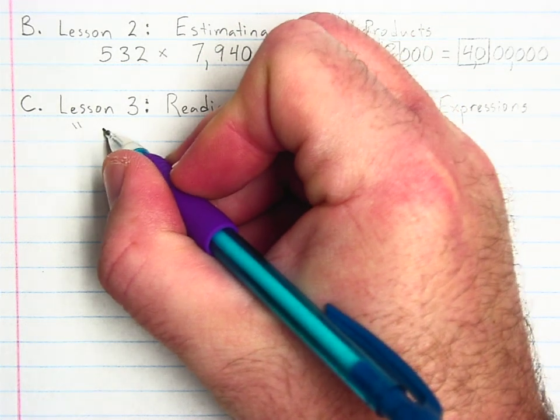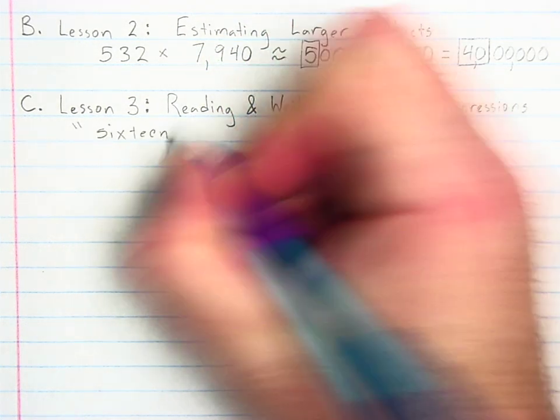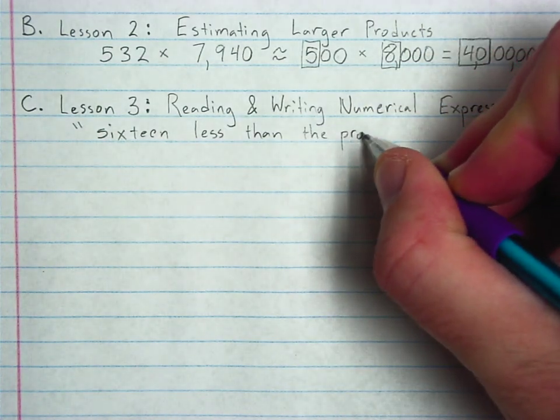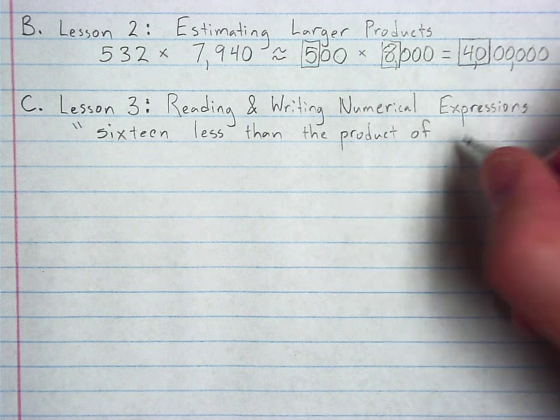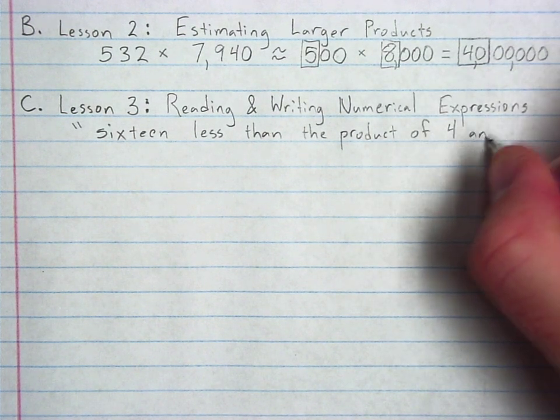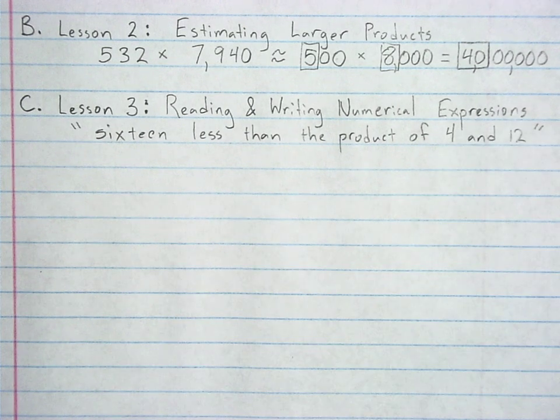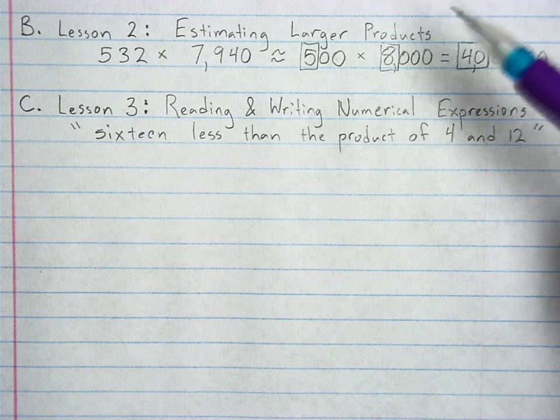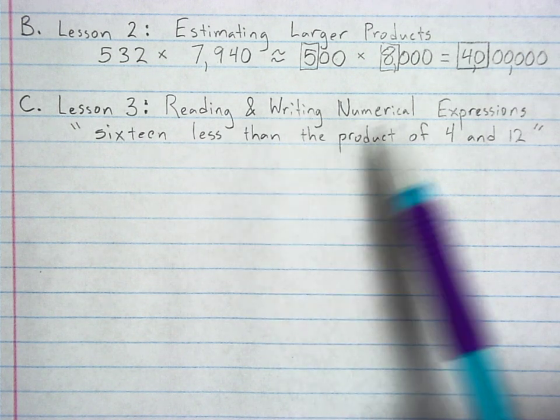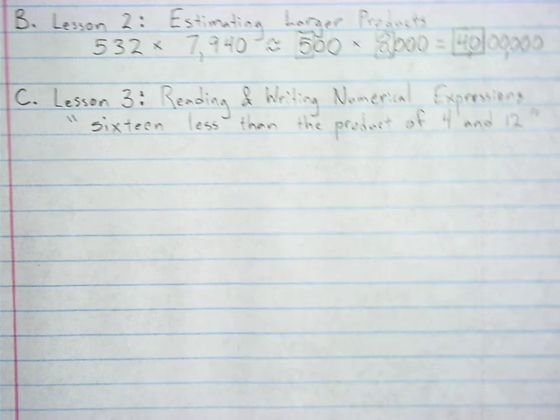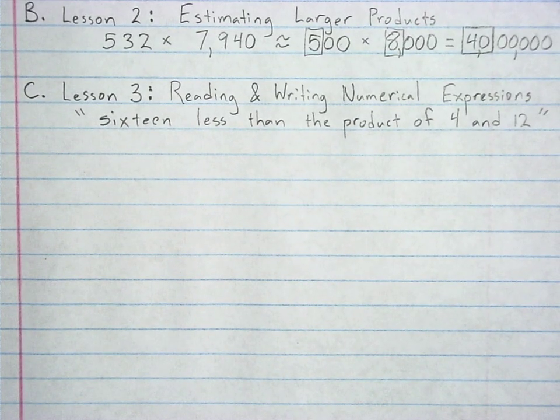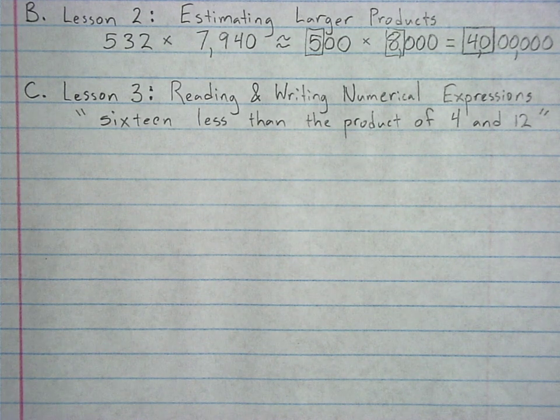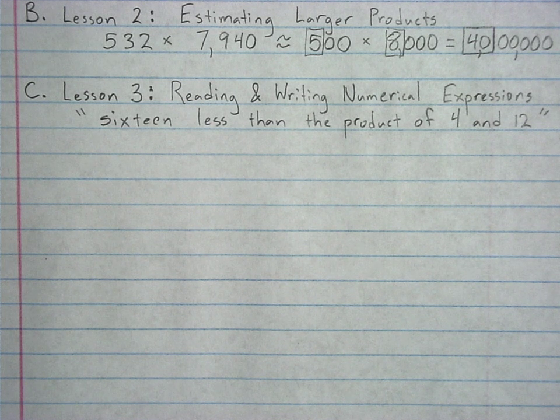For example, if I give you 16 less than the product of 4 and 12. And really, those would normally be words but we're running out of space on the line. 16 less than the product of 4 and 12. Pause the video. See if you can write a number sentence based on that. Again, if you can't, I am going to show you. I'm going to show you either way. Pause. We'll see what you get.